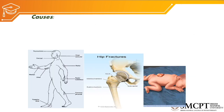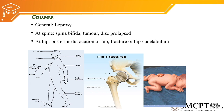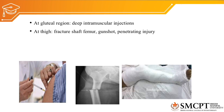What are the general causes for sciatic nerve injury? Leprosy can cause nerve injuries. At the spine, spina bifida, tumour, or disc prolapse can cause sciatic nerve injury. At the hip joint, posterior dislocation of the hip or fracture of the hip or acetabulum can compress or injure the nerve at the posterior aspect of the hip joint. At the gluteal region, deep intramuscular injections are a common cause. At the thigh, fractures of the femur or any penetrating injury can cause sciatic nerve injury.